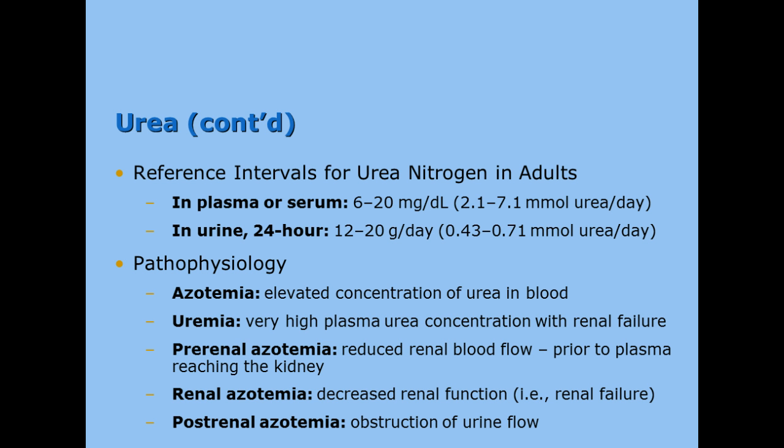Some terms to be familiar with: azotemia refers to having an elevated concentration of urea in the blood. Uremia is a very high plasma urea concentration which includes renal failure. Then we have pre-renal, renal, and post-renal azotemia. Pre-renal azotemia is caused by reduced renal blood flow or low blood pressure — something wrong before the plasma reaches the kidney. Renal azotemia means decreased renal function or renal failure. Post-renal azotemia is usually caused by an obstruction to urine flow, such as a kidney stone.